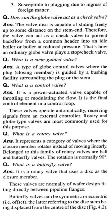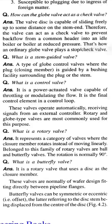What is a control valve? Answer: It is a power-actuated valve capable of throttling and modulating the flow. It is the final control element in a control loop. These valves operate automatically, receiving signals from an external controller. Rotary and globe-type valves are most commonly used for this purpose.